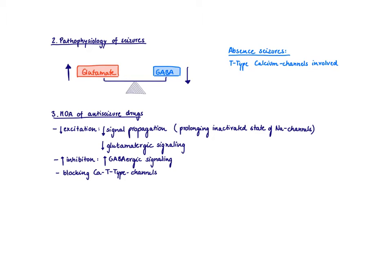T stands for tiny because they have a very tiny current, and also the idea is they sit in the thalamus and are very important for basal electrical activity. And the idea is that in absence seizures, you have too much activity in this T-type calcium channels.